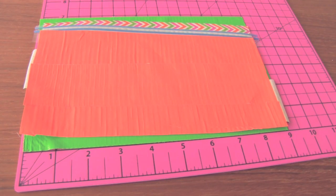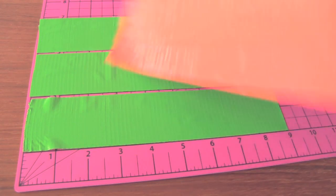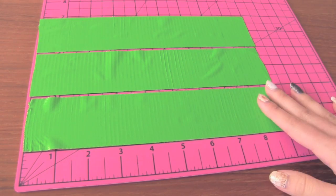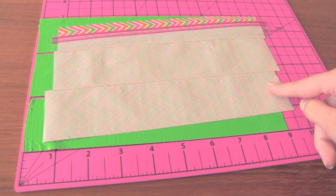I cut three 9 inch strips of orange tape and I attached them to the inside of this duct tape sheet. I also cut three 9 inch strips of this green tape and I'm going to show you how to attach them to the inside here.